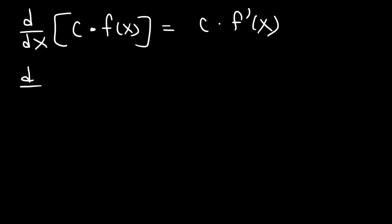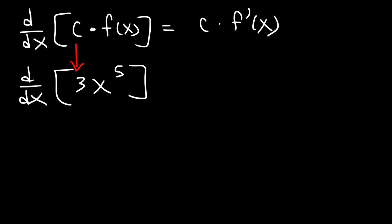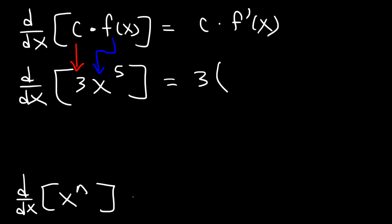Let me give you an example. Let's say we want to differentiate 3x to the fifth power. The constant is 3, and the function f(x) is x to the fifth. You can differentiate x to the fifth using the power rule. Let's rewrite the constant 3 and take the derivative of x to the fifth. The derivative of x to the n is n times x raised to the n minus 1, so that's going to be 5 times x raised to the 5 minus 1.